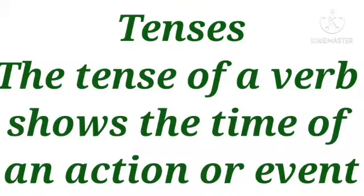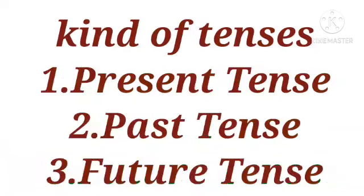Before that, we need to study about tenses. The tense of a verb shows the time of an action or event. There are three kinds of tenses: first one is present tense, second one is past tense, and third one is future tense.